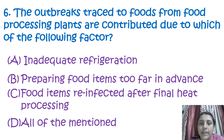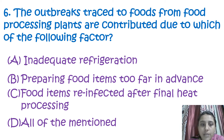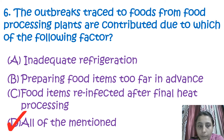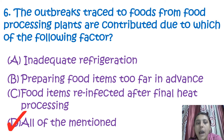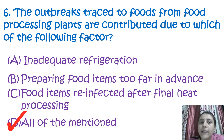The next question is: outbreaks traced to foods from food processing plants are contributed due to which of the following factors? The answer is all of the above — inadequate refrigeration, preparing food items too far in advance, and food items reinfected after final heat processing.